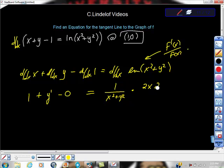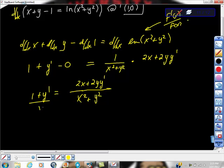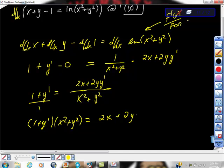So I'm going to take 1 over x squared plus y squared times the derivative of the inside, which is 2x plus 2y y prime. I'm going to put those things together and get 1 plus y prime is equal to 2x plus 2y y prime over x squared plus y squared. I'm going to do a little bit more work. I'm going to cross multiply here, and that gets us to 1 plus y prime times x squared plus y squared is equal to 2x plus 2y y prime.